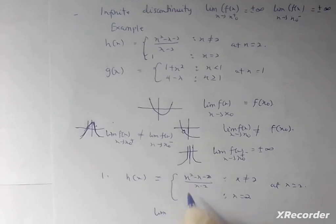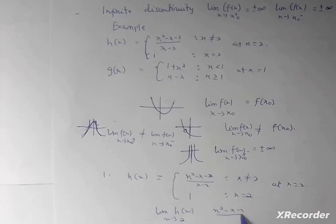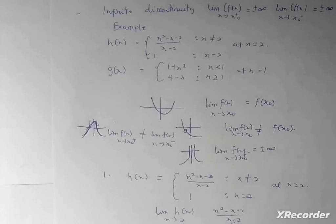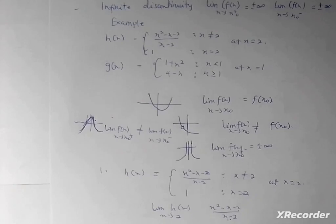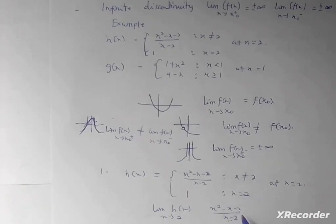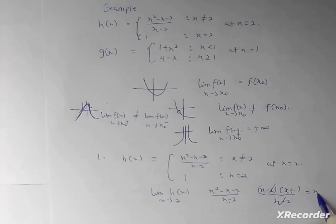Finding the limit of h(x) as x approaches 2, I take the expression (x² − x − 2)/(x − 2). Substituting 2 directly gives an indeterminate form, so I must simplify first. Factorizing x² − x − 2 gives (x − 2)(x + 1), since the factors of −2 that add to −1 are −2 and +1. So the expression becomes (x − 2)(x + 1)/(x − 2), and the (x − 2) cancels, leaving x + 1. Therefore, the limit equals 2 + 1, which is 3.